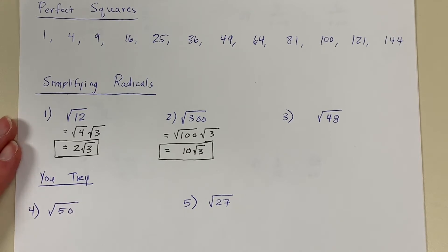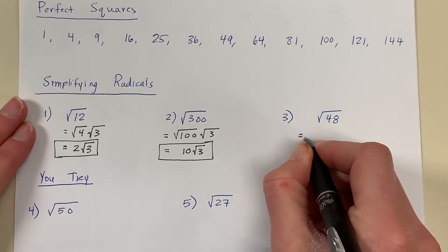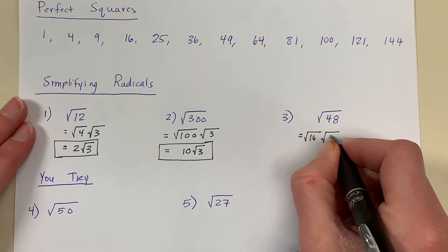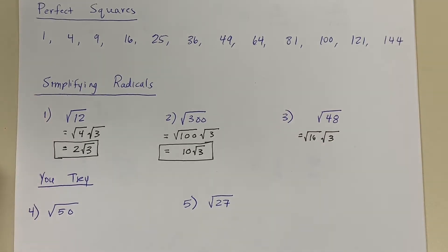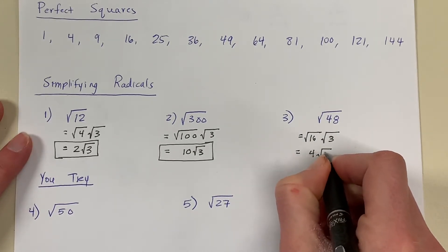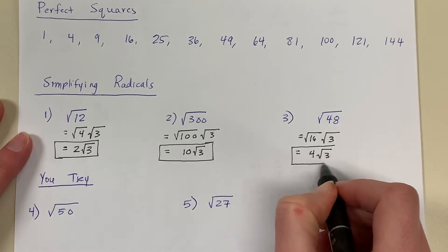In problem number 3, I have the square root of 48. I'm looking for the largest perfect square that divides into 48, and that number is 16. So the square root of 48 is the square root of 16 times the square root of 3, since 16 times 3 is 48. The square root of 16 is 4, so in simplest radical form, the square root of 48 is 4 radical 3.